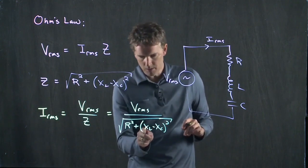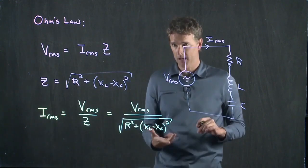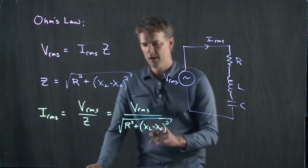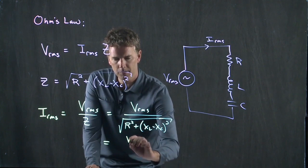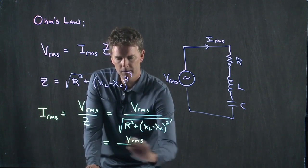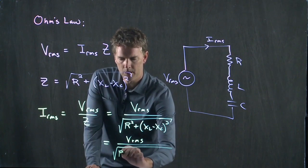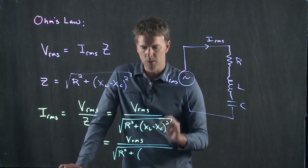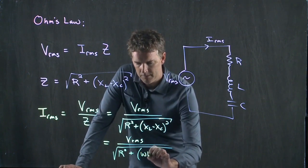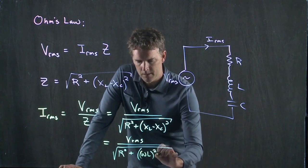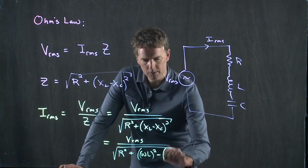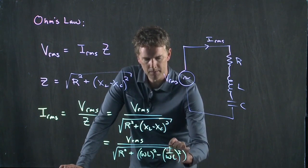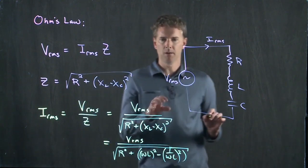But we also know that XL and XC depend on frequency. And so if we write this out with those frequencies in mind, what does this become? VRMS divided by square root R squared plus, and if we write this, XL was omega times L, XC was one over omega C. So that's what our equation becomes.